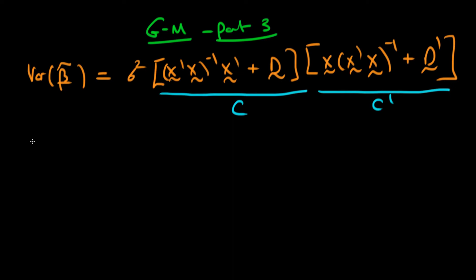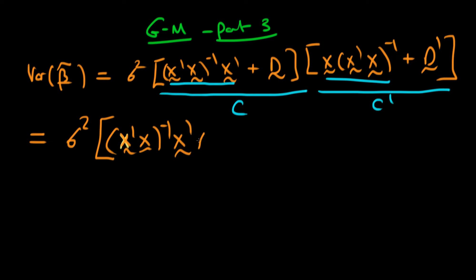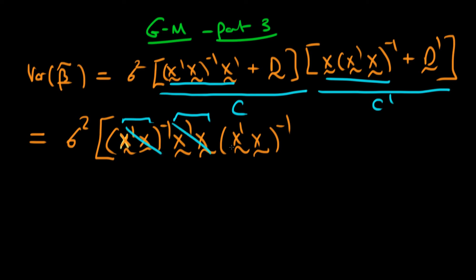So how do I simplify this whole thing? Well the idea is that I have to multiply it out. So if I multiply it out I just get sigma squared. The first term is going to be x primed x to the power minus 1, times x primed times x, times x primed x to the power minus 1. We note that this is a matrix A times its inverse times itself, and any matrix A inverted times itself is just the identity matrix. So these two things cancel one another and I'm just left with this last term, because the identity matrix times this last term is just this last term.